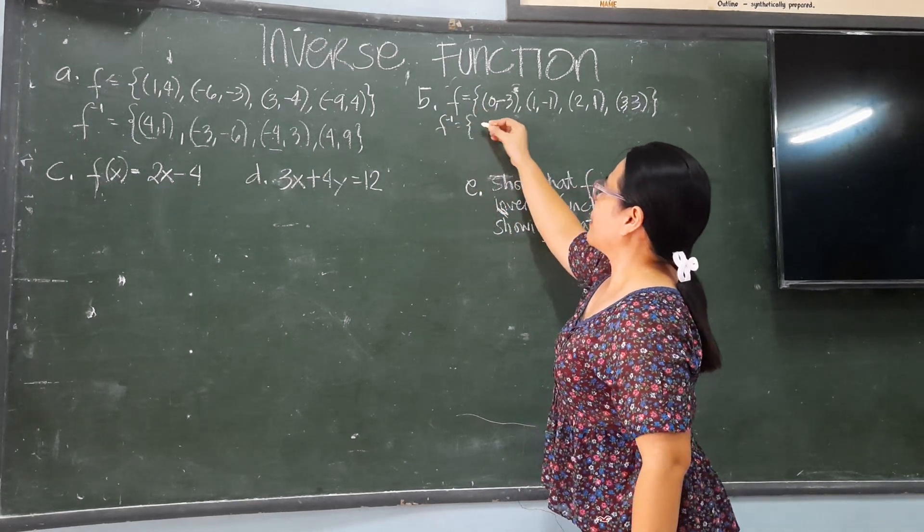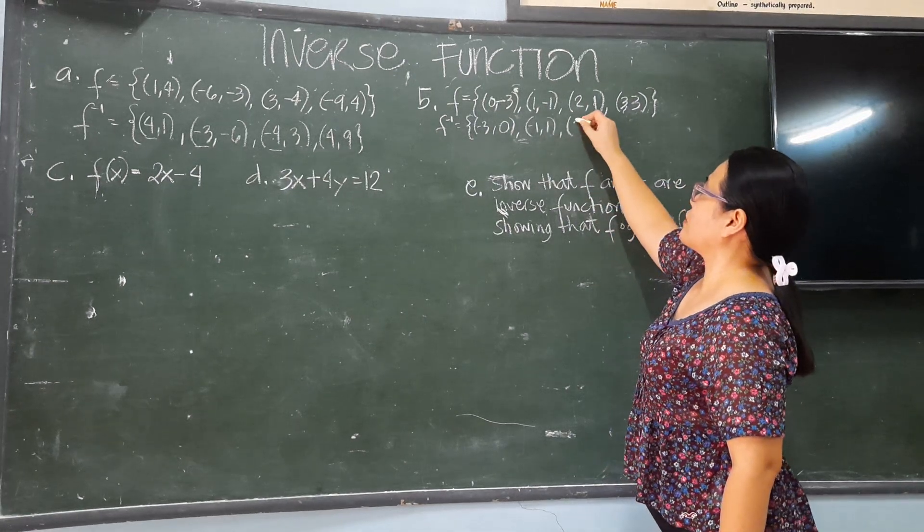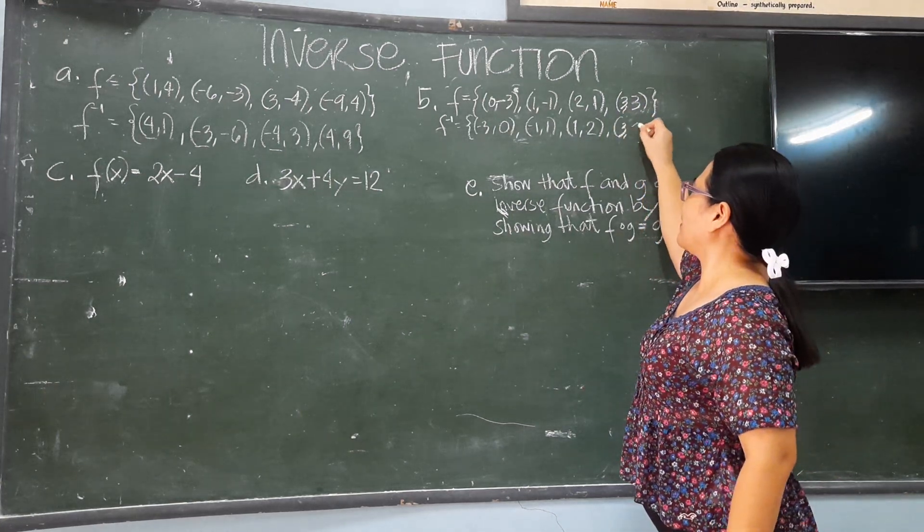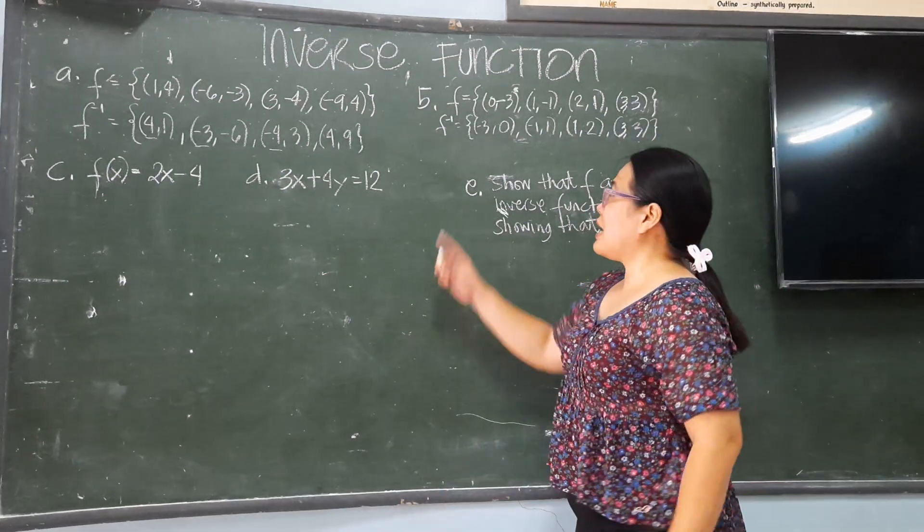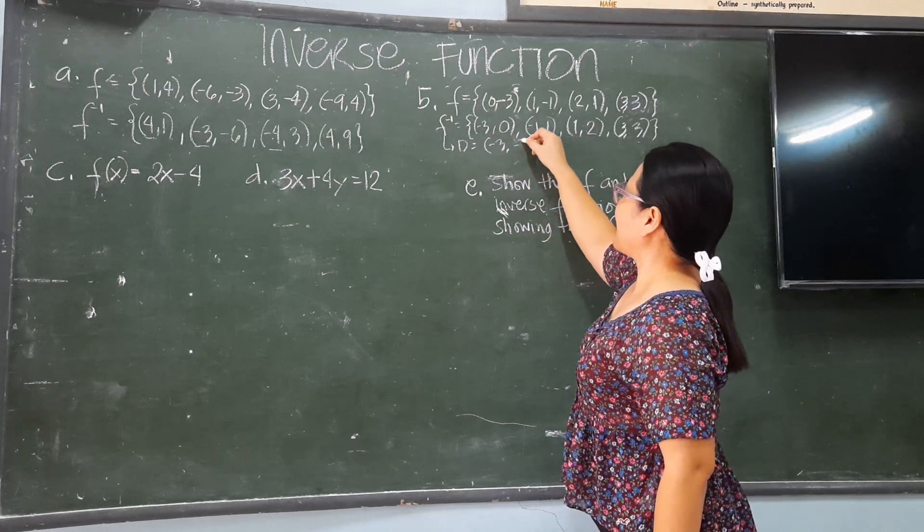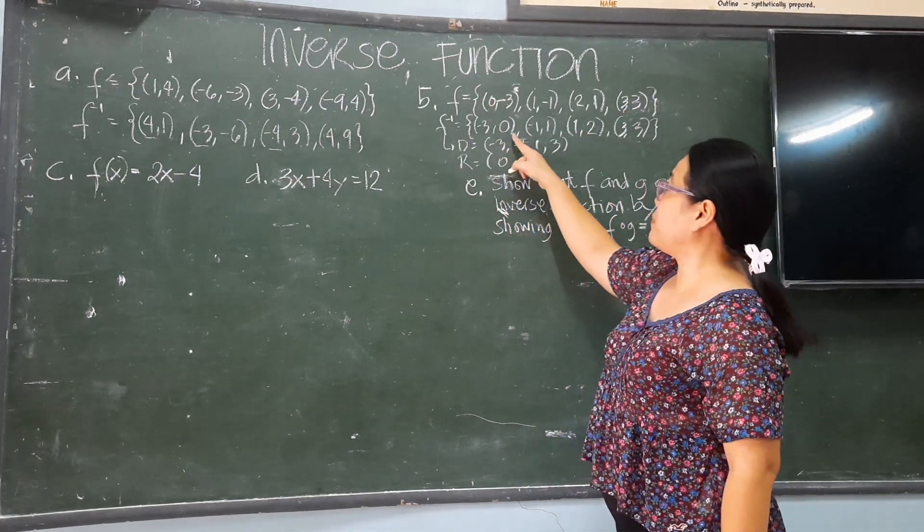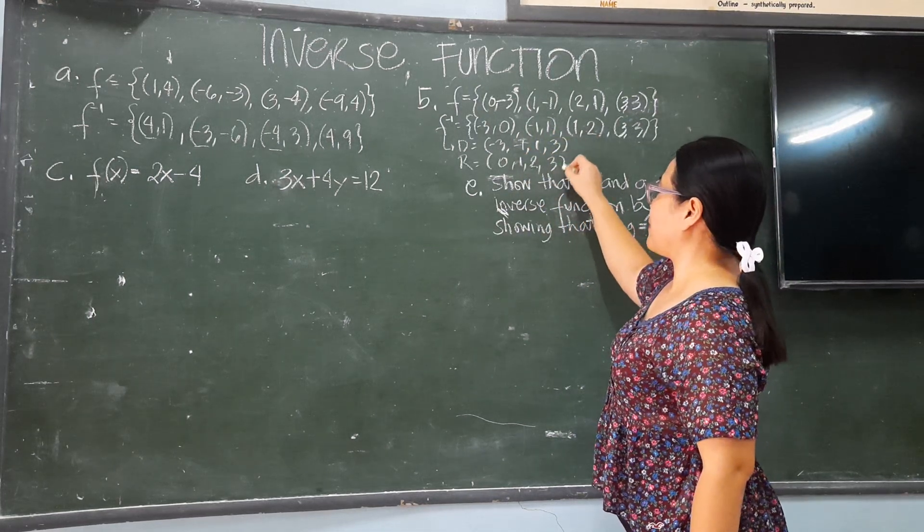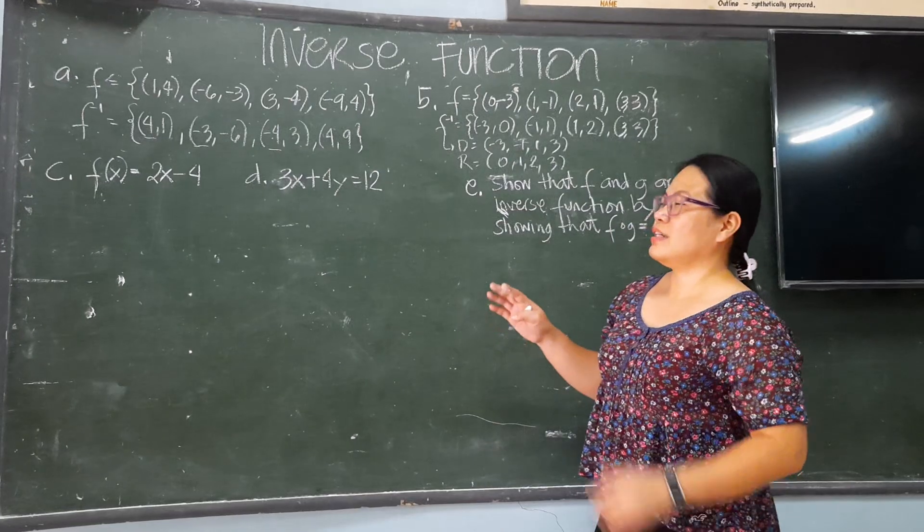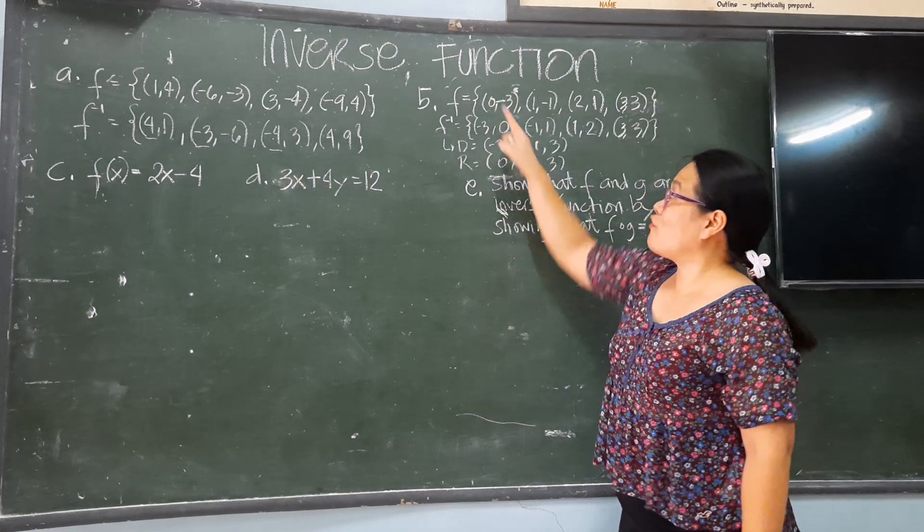Now on the second one, it is the same: find the inverse. You will get the inverse. That is (-3,0), (-1,1), (1,2), and since they are both 3, you just copy (3,3). To get the domain of the inverse function, it is {-3, -1, 1, 3}, and the range of the inverse is {0, 1, 2, 3}. This is the domain and range for the inverse function of these ordered pairs.